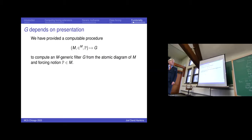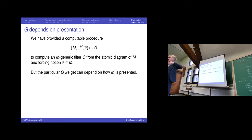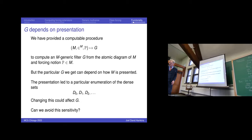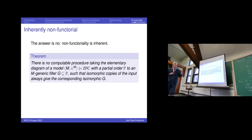The particular construction we gave is definitely not uniform: given a model M with membership relation and P and an oracle, we explained how to find G by building a descending sequence and taking the filter. That's definitely dependent on how M is presented — if I rearrange M, the particular dense sets that show up lead to a different descending sequence, which can definitely change G. If G changes, it can change the theory of M[G]. The answer is that non-functoriality is inherent: there's no computable procedure which takes the elementary diagram of a model and a partial order and produces a generic filter such that isomorphic copies of the input always yield the same filter.